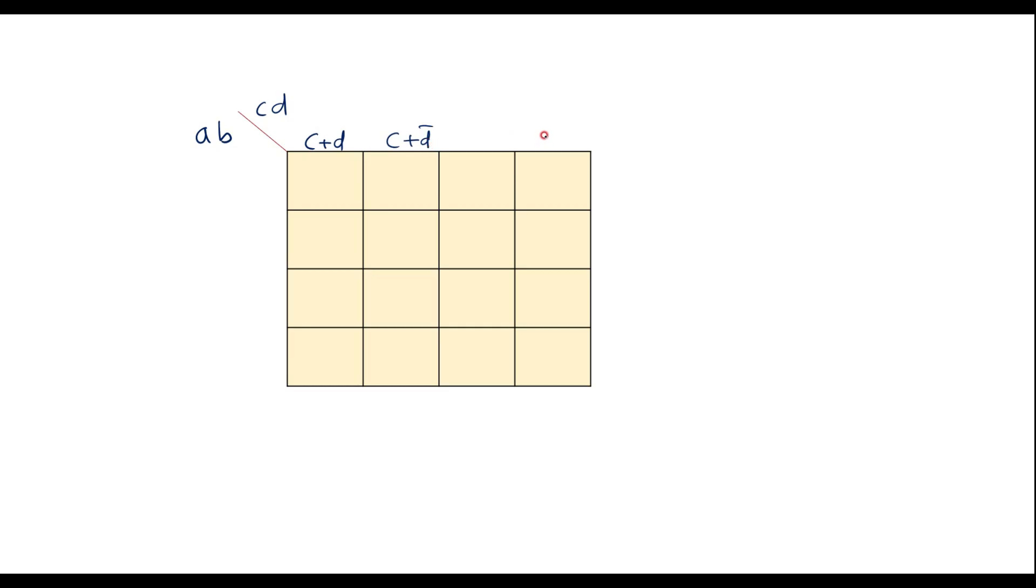this will be c d bar. 0, 0, 0, 1, 1, 0 is nothing but c bar plus d. 1, 1 is nothing but c bar plus d bar.